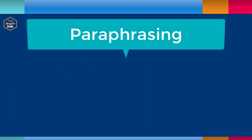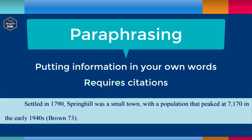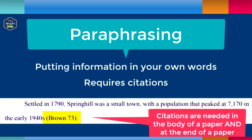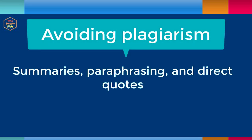Paraphrasing or rewording involves putting a passage from a source into your own words. Paraphrasing and summarizing also require citations. Even though the information will be in your own words, you still need to cite the source of your information. If there is no citation for information or ideas that are not your own, it is considered plagiarism. The use of summaries, paraphrases, and quotations are often combined in writing.